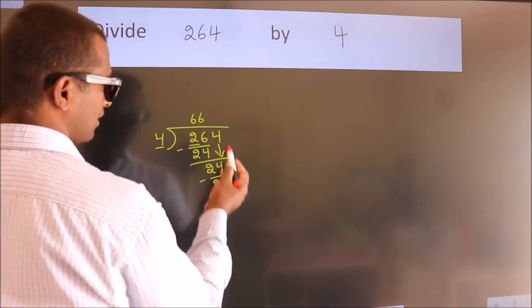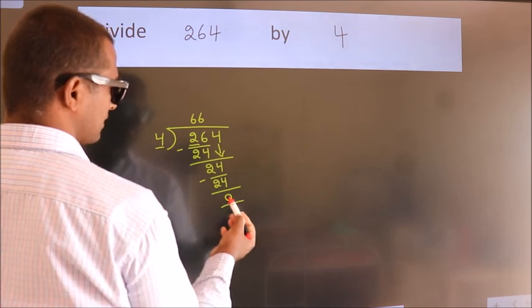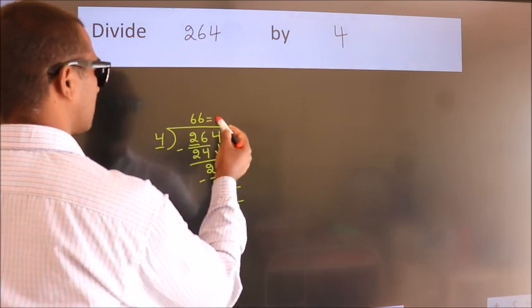After this, no more numbers to bring it down, and we got remainder 0. So this is our quotient.